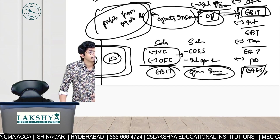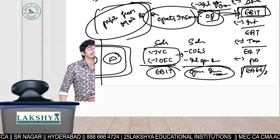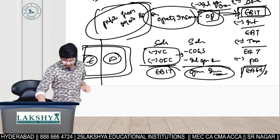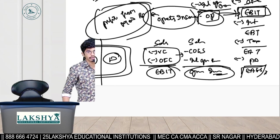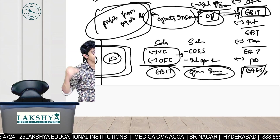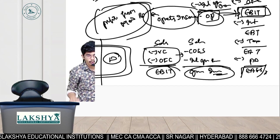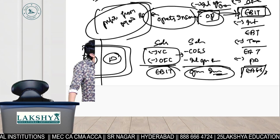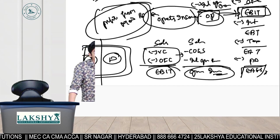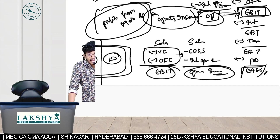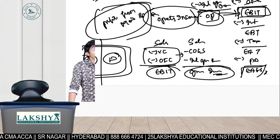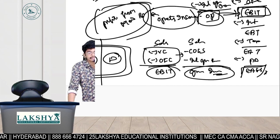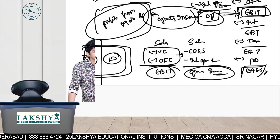To summarize the three formulas in the capital structure chapter: First, Value of a firm = EBIT / Ko. Second, Value of equity = Earnings available to equity shareholders / Ke. Third, Value of a firm = Value of equity plus value of debt.